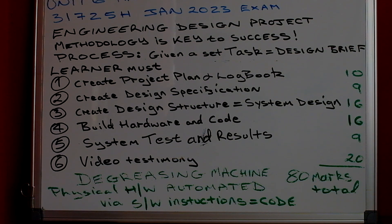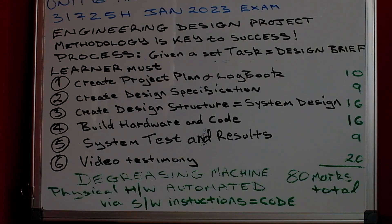How do we go about it? We go about it through proper process. The first thing we're going to do is to create a project plan and develop a logbook. That is Activity 1, for 10 marks. The logbook will continue to be developed through all six activities.